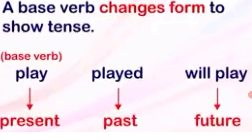A base verb changes form to show tense. For example: 'play' is present tense; 'played' — where '-ed' is added — is past tense; and 'will play' is future tense. So 'play' is present, 'played' with '-ed' added is past, and 'will play' uses 'will' for the future.